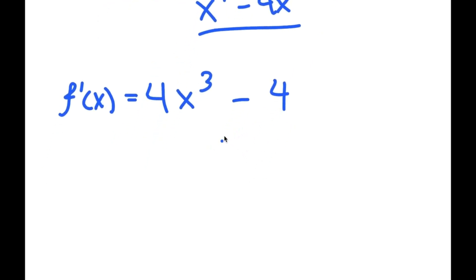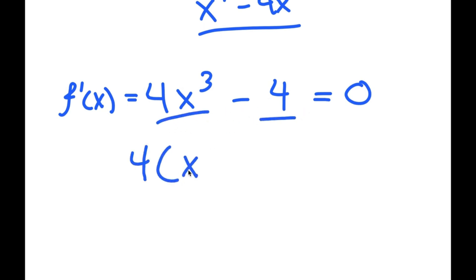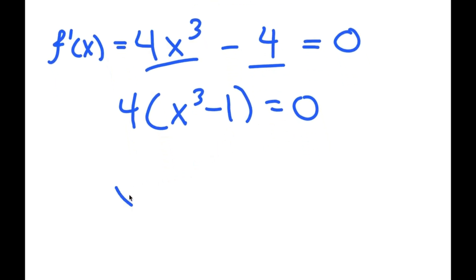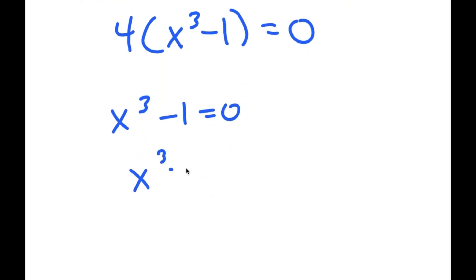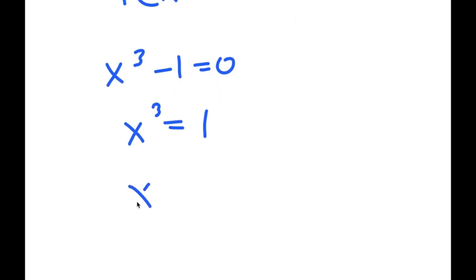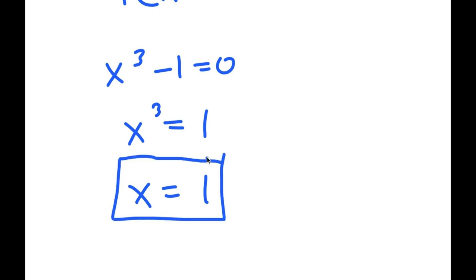So the derivative is 4x to the power of 3 minus 4. I set this equal to 0, and I can factor out 4 to get 4 times x to the power of 3 minus 1 equals 0. This means x to the power of 3 minus 1 equals 0, so x to the power of 3 equals 1, and x equals 1. So x equals 1 is the minimum value. Thank you for watching, and please make sure to subscribe.